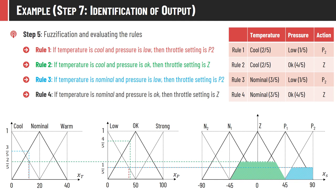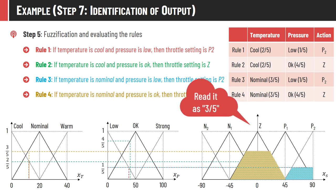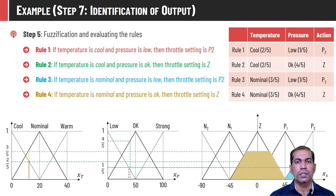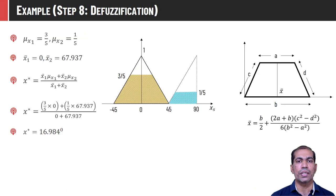All four rules are fired and the corresponding areas spanned by each rule are computed and shown graphically. We use the aggregated area for computing the output — this is the aggregated fuzzy output function. We can apply various defuzzification methods on this to compute the final crisp value corresponding to 30% temperature and 40% pressure.